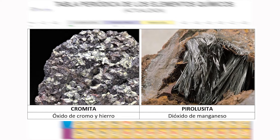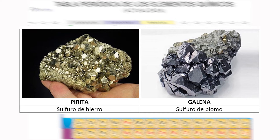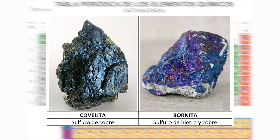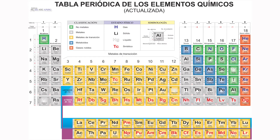Mientras que el mineral pirolucita está formado por dióxido de manganeso, de donde se obtiene evidentemente el elemento metálico manganeso. Estos dos minerales son sulfuros. El primero es sulfuro de hierro y el segundo sulfuro de plomo. Sus nombres comunes son pirita y galena. Y aquí se muestra el mineral llamado cobelita, cuyo nombre químico es sulfuro de cobre. Y el mineral bornita, formado por sulfuro de hierro y cobre. Muchos de esos minerales se forman como producto de actividad volcánica y otras se forman por el arrastre de los ríos o como una acumulación de sales.